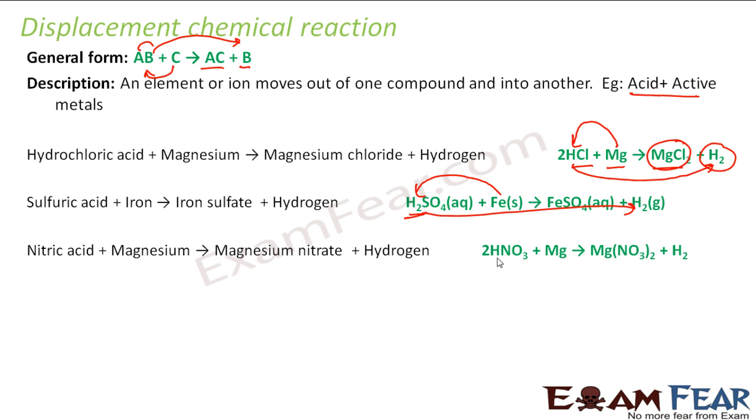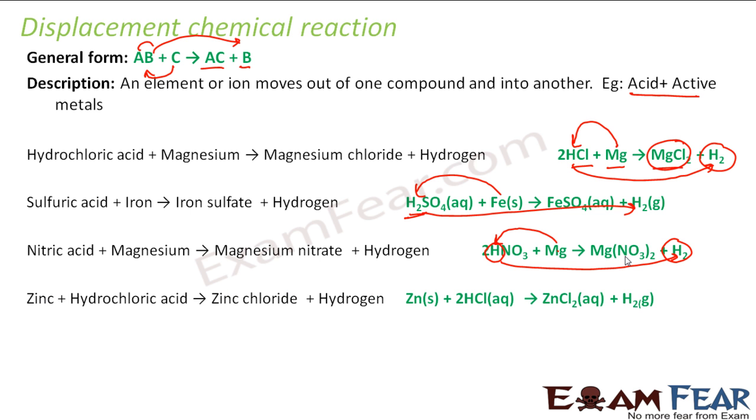Here you can see nitric acid plus magnesium gives magnesium nitrate and hydrogen. So you have HNO3 plus magnesium it gives magnesium nitrate and hydrogen. So if you see the magnesium came here, kicked out hydrogen and the hydrogen is out. Right, and magnesium and nitrate become magnesium nitrate.